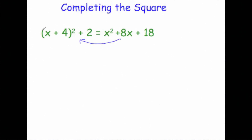Notice if I had x plus 4, all squared, plus 2 — well, x plus 4 all squared would be x plus 4 times x plus 4. If you were to do FOIL on that, expanding it, you'd get x squared plus 8x plus 16. And notice if you add 2 to that you would get x squared plus 8x plus 18. So what we're now going to do is see how to go from the quadratic back into that format.